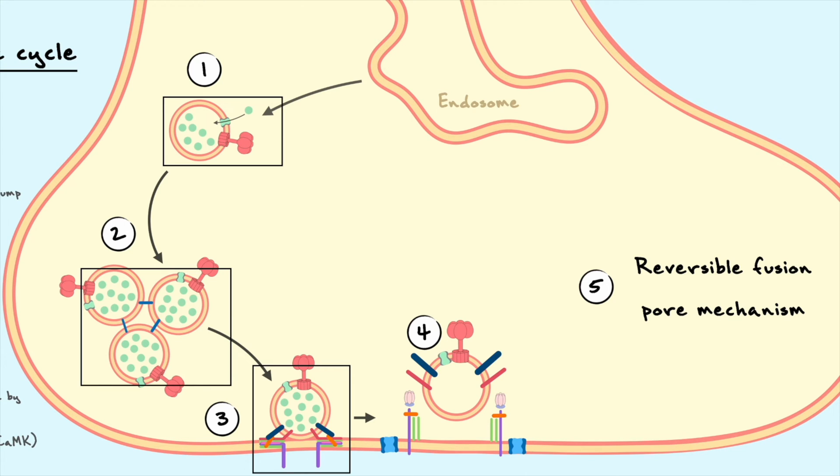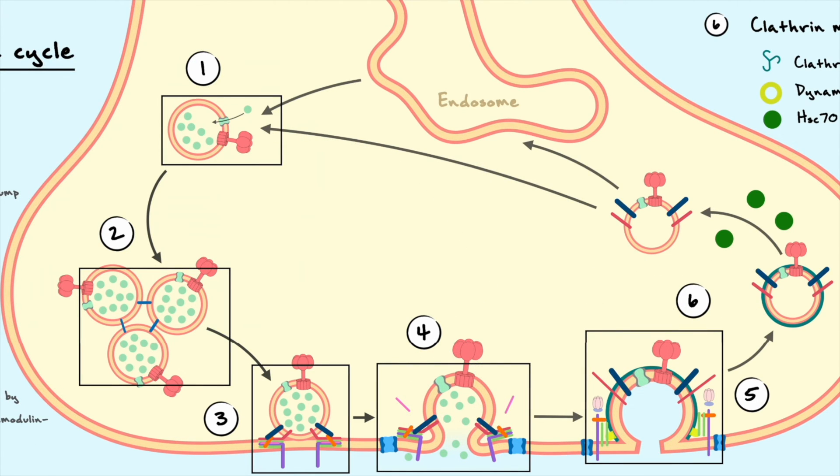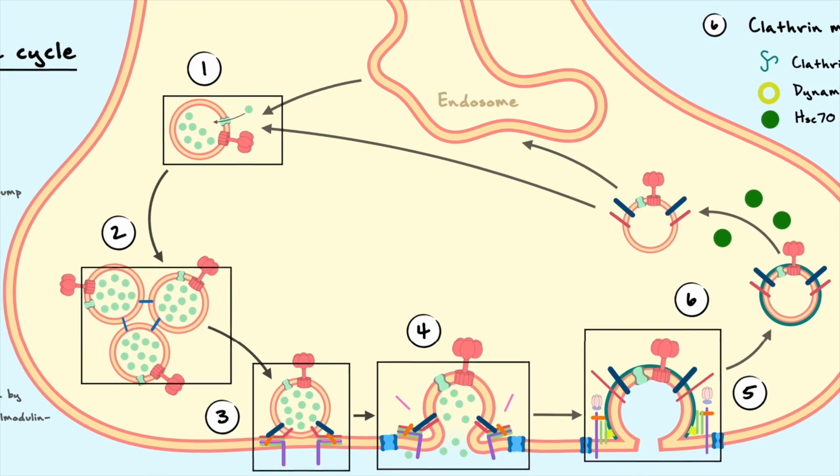If after reformation the vesicle stays at the membrane, the vesicle is set to do the kiss and run pathway. If the vesicle goes back to the endosome or gets directly refilled, the vesicle is set to do the kiss and stay pathway. Nonetheless, the clathrin-mediated vesicle recycling pathway is more commonly thought as being the default mode of recycling, so we will make the same assessment for our model and consider the clathrin mechanism as our default. With this being said, the vesicle cycle as we know it looks a bit like this.